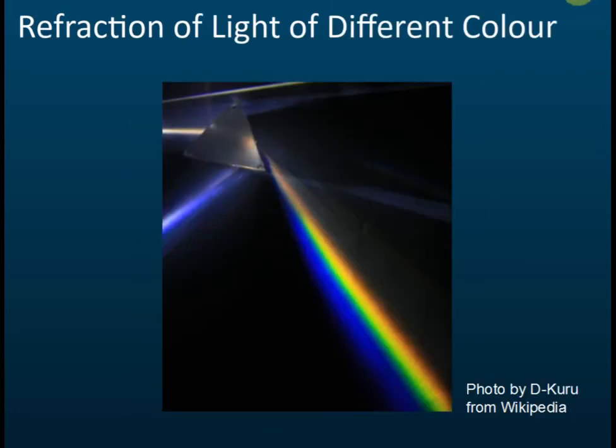One more thing you need to note is the refraction of light of different colors. From this experiment, we can see white light moves into the prism. White light has seven colors, and these seven colors are separated. The red light is refracted less compared to the blue or indigo light. Blue light is refracted more compared to red light.